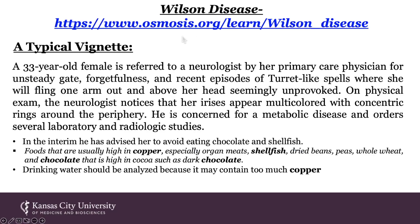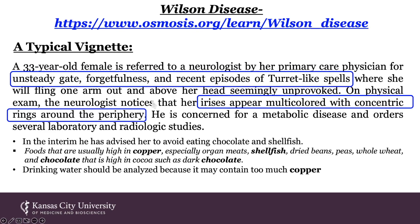Here's a typical vignette for Wilson disease. A 33-year-old female is referred to a neurologist for unsteady gait, forgetfulness, and recent episodes of Tourette-like spells where she flings one arm out above her head, seemingly unprovoked. On physical exam, the neurologist notices that her irises appear multicolored with concentric rings around the periphery. He's concerned for a metabolic disease and orders laboratory and radiologic studies. In the interim, he advises her to avoid eating chocolate and shellfish — foods high in copper, especially organ meats, shellfish, dried beans, peas, whole wheat, and dark chocolate. The patient's drinking water should likely be analyzed for copper content.